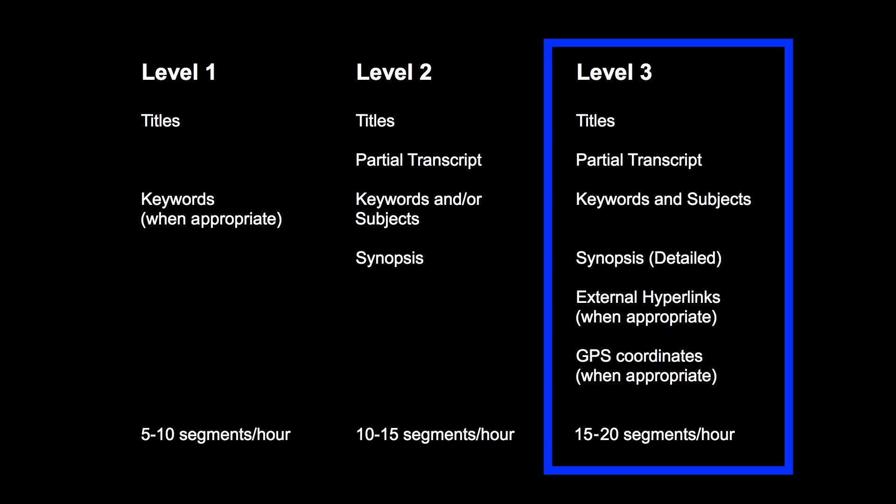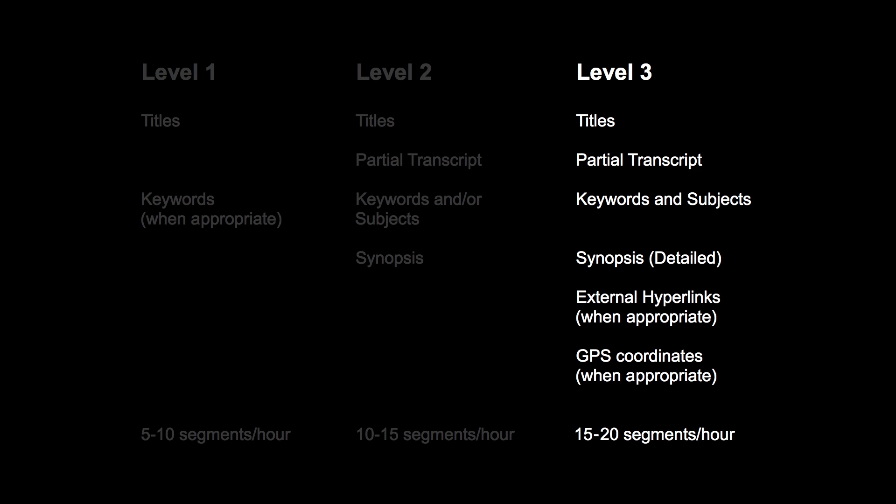A level 3 index is the most detailed level, providing users with the greatest amount of information. Although creating a level 3 index will take the greatest amount of time on the part of the indexer, it provides the user with the most clear picture of the interview. A typical level 3 index in OHMS will contain 15 to 20 segments per hour of interview time. Level 3 indexes make use of all available metadata fields. Along with the mandatory title for each segment, level 3 indexes contain keywords, subjects, partial transcripts, and a brief synopsis, as well as GPS coordinates and external hyperlinks when appropriate.